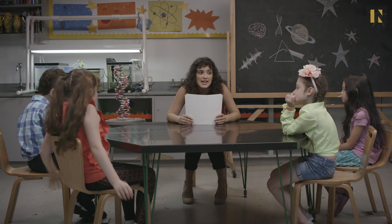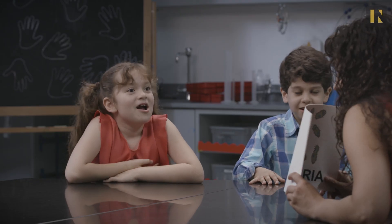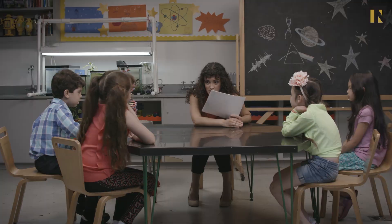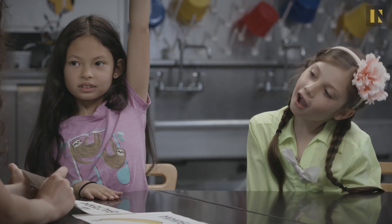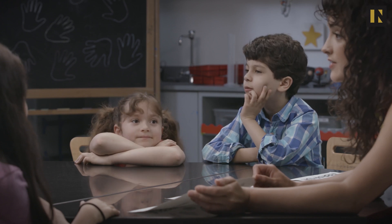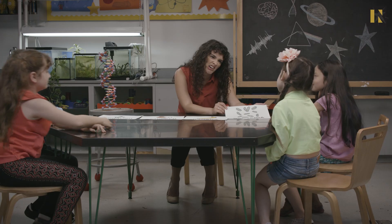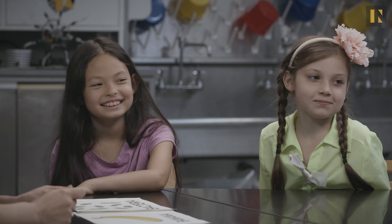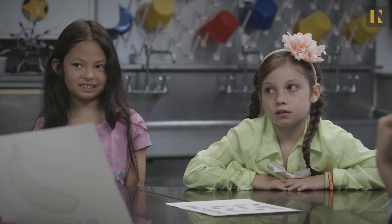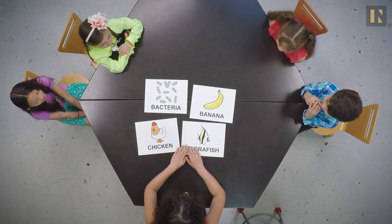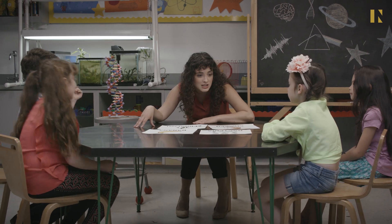Experiment two! I'm gonna put on the table four different organisms. You guys are gonna have to rank them from what is most similar to us in our DNA to what is least similar. The first one is bacteria — some bacteria can be good and some can be bad. Some can live in our stomach and help us digest food. When you eat an apple, it doesn't look like an apple when it comes out the other end — that's bacteria that helps you digest it. The next one is a banana — that has DNA too. The next one is a chicken. And our last one is a zebrafish.